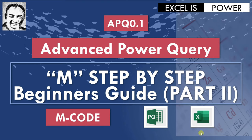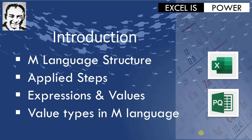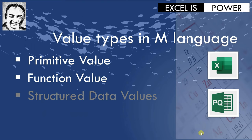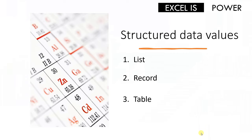So you can consider it part two of M Language step by step, or the beginner's guide for M language. A quick reminder of the discussion we had in the previous video: we had an introduction about M language structure, the applied steps, expressions and values, and value types. We already started to discuss the value types — we looked at primitive values and function values — but we didn't discuss the structured data values. Today we are going to start discussing the structured data values: the list, the record, and the table.